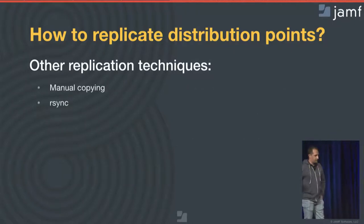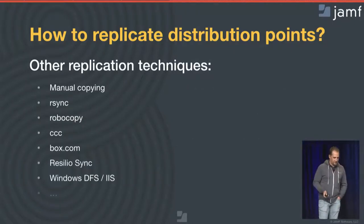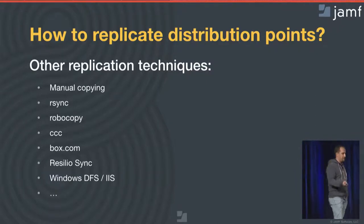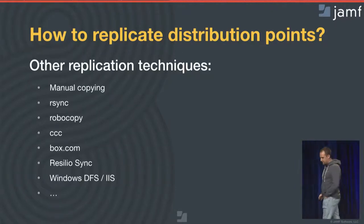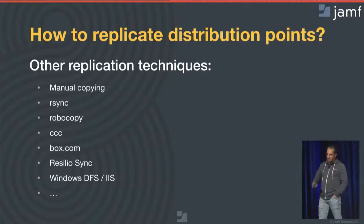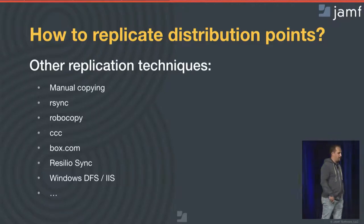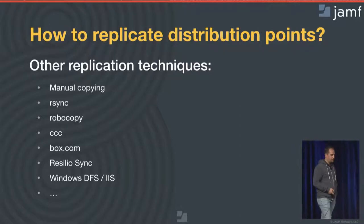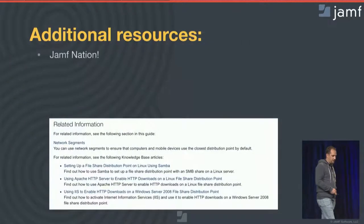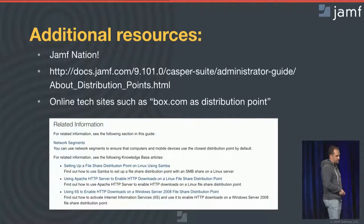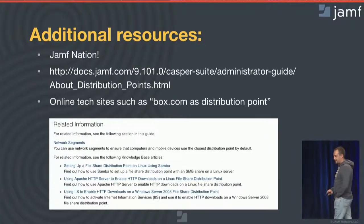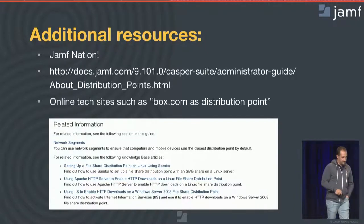I apologize in advance for opening Pandora's box at the very end of this session because there is so much discussion about replication methods. I'm not going to go into detail on all the different types — partly due to my own experience as a field tech doing jumpstarts rather than a Windows admin. I would say have a look at Jamf Nation; there is a lot of discussion going on, going from manual copying to Windows DFS, et cetera. A few that I do like are Resilio Sync, and maybe even a solution with Box.com.